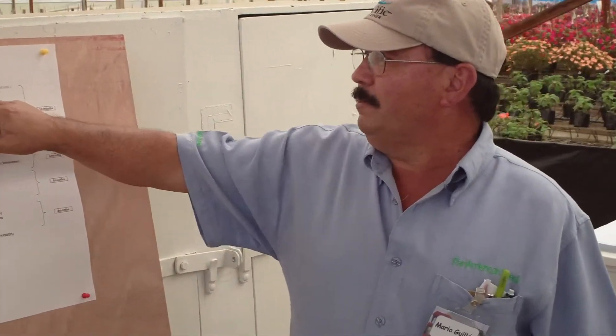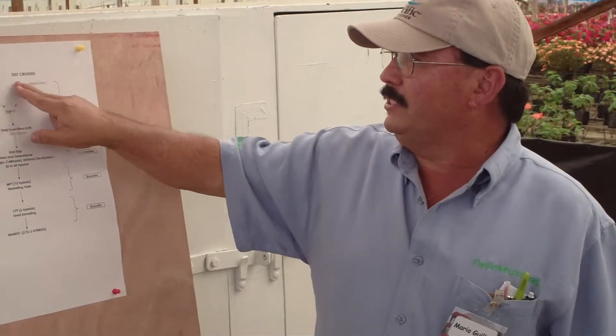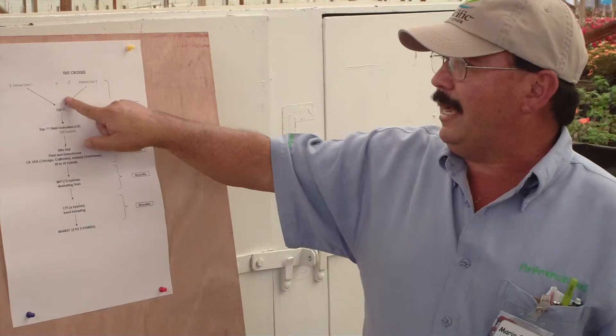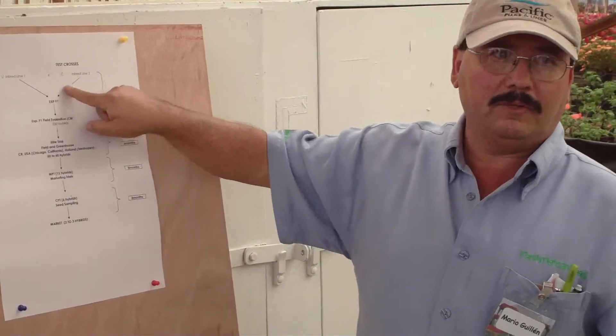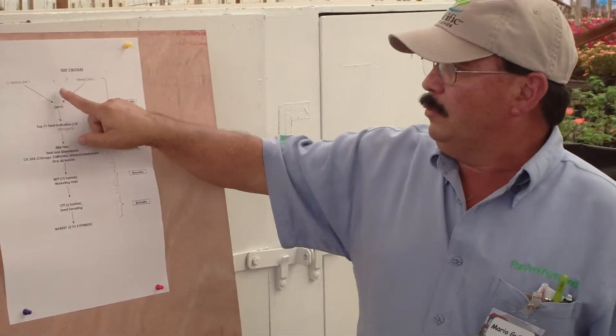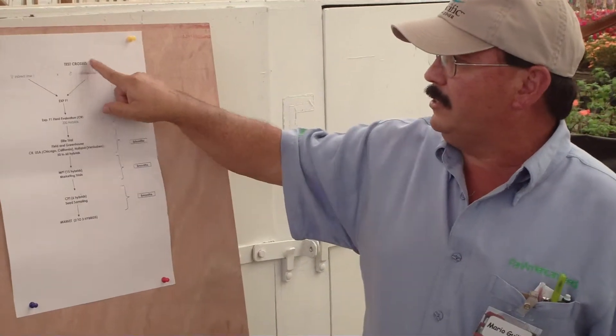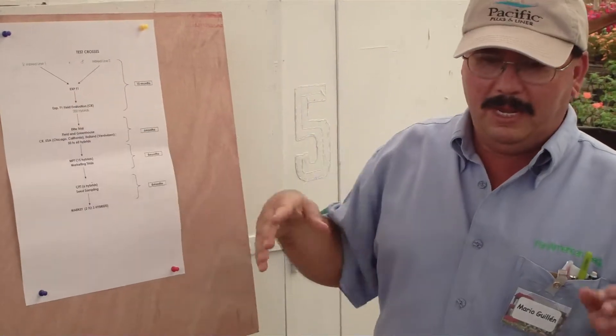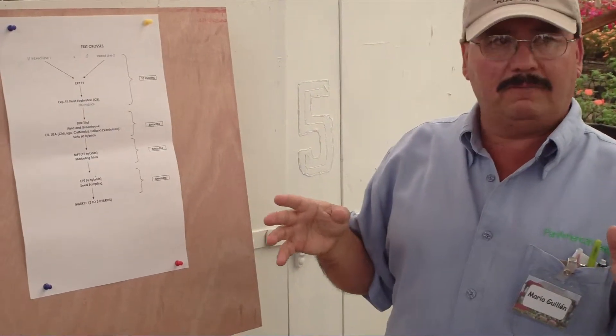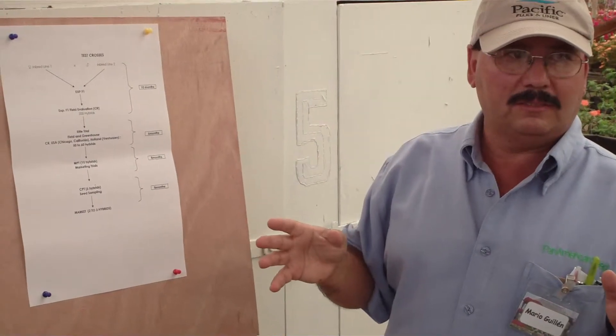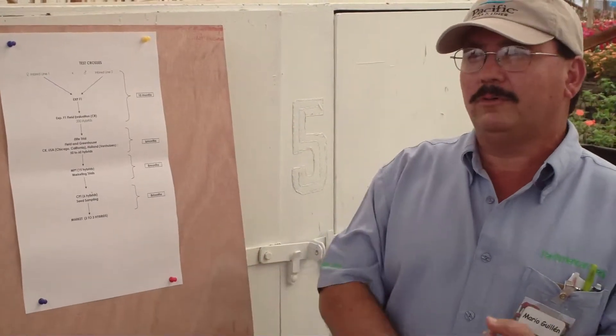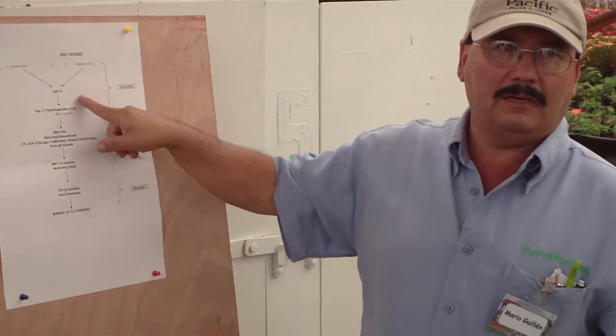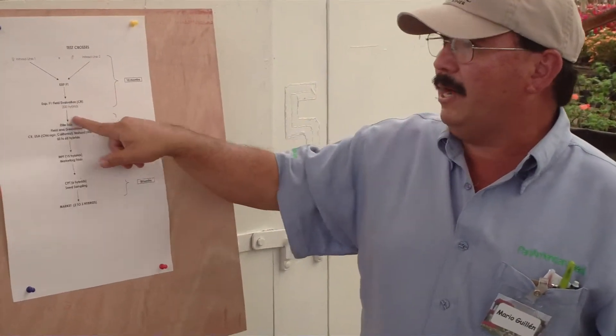And once you take your embryo lines, you have to initiate your test process to get some experimental hybrids with potential for the market. Once you start to make your test process, I usually make in New Guinea a set of 400 or 500 crosses. Because I have to screen for productivity, for pollen, etc.